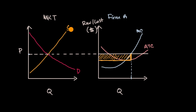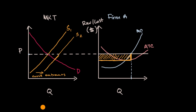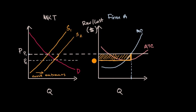If that original supply curve is supply curve one, with more entrants you go to supply curve two. In this situation there is a new equilibrium price. If the original price was P1, we now have a new equilibrium price P2, which is going to define a new marginal revenue curve for all of the players in this perfectly competitive market.